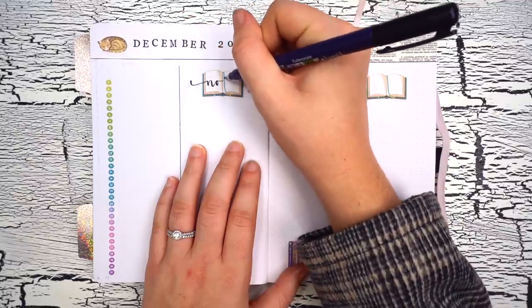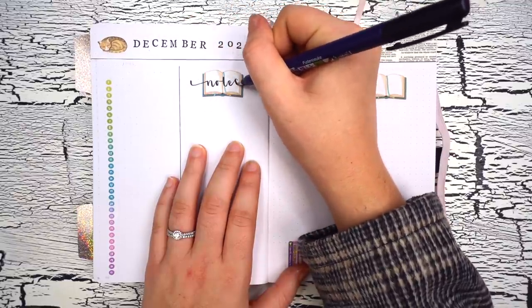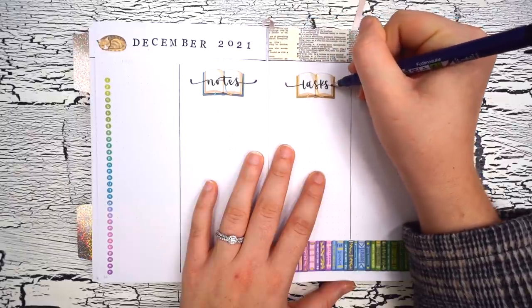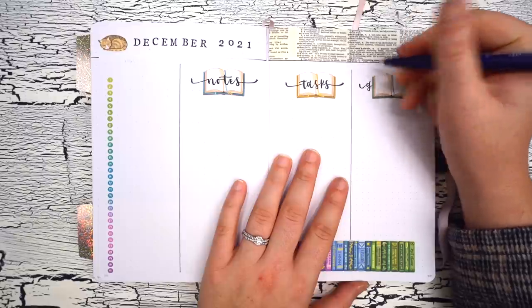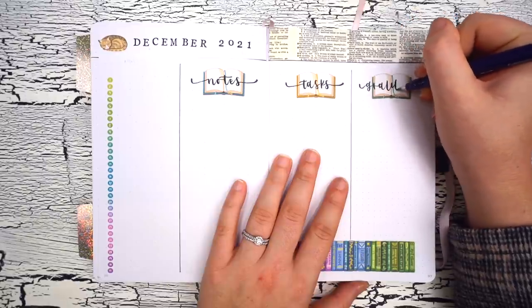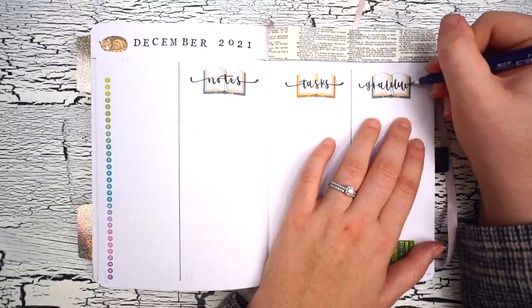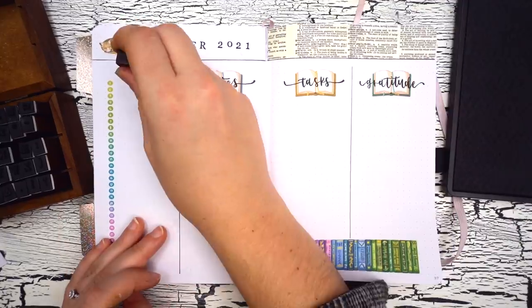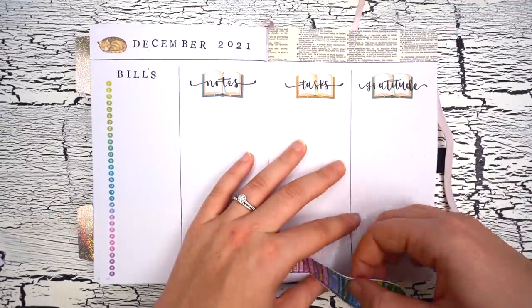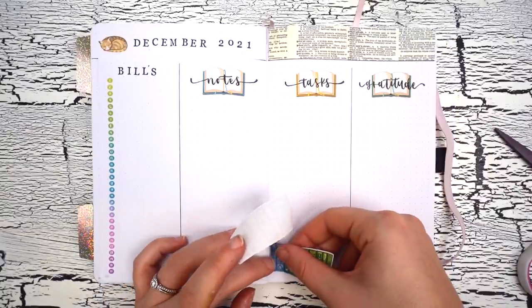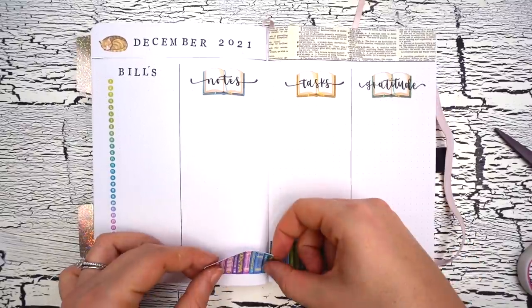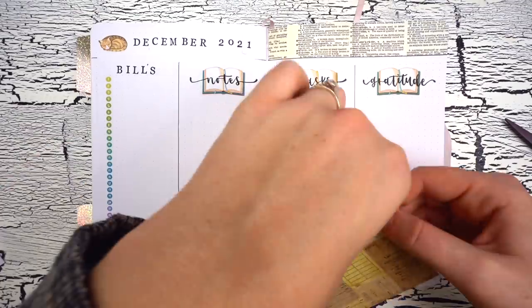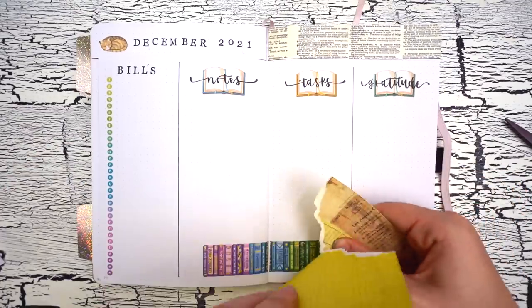Using my brush pen, I'm writing in my headers over those journal stickers for my notes, tasks, and gratitude sections, and I'm going to create a simple header for my bill schedule with my alphabet stamps. I get asked a lot if you're able to write on top of my stickers and if so, what kind of supplies you can use on top of them, and the answer is pretty much anything that you can use in your journal you can use on top of these stickers. All of the stickers are made from normal matte sticker paper, so it's not glossy at all, nothing smears on top of it, so you can just use your pens, stamps, markers, paint, white out, gel pens, basically anything that you'd normally use in your journal.